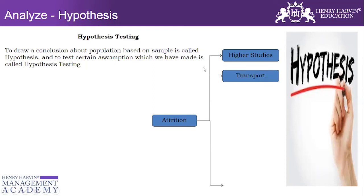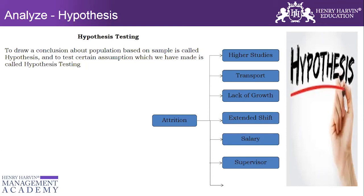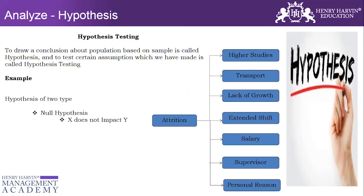Let's take an example. Say we are doing a project on improving attrition, and we have certain potential causes such as higher studies, transport, lack of growth, extended shifts, salary, supervisor, and personal reasons. We are not sure whether these causes are significantly impacting attrition, but with the help of hypothesis testing we would be able to prove whether these causes have a significant impact.